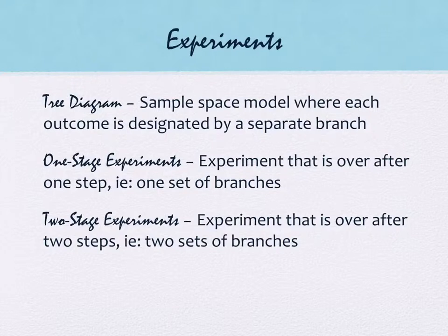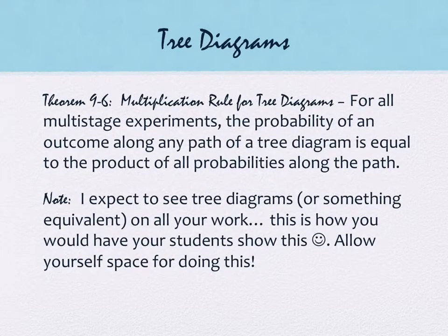We're going to be working heavily with something called a tree diagram. So a tree diagram is a sample space model where each outcome is designated by a separate branch. In a one-stage experiment, the experiment is over after one step, which is one set of branches. But with a two-stage experiment, the experiment will be over after two steps, which is two sets of branches. There's a multiplication rule for tree diagrams, Theorem 9-6. And it says, for all multi-stage experiments, the probability of an outcome along any path of a tree diagram is equal to the product of all probabilities along that path.